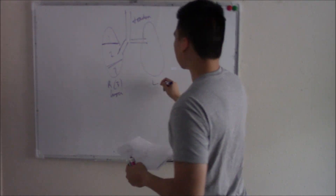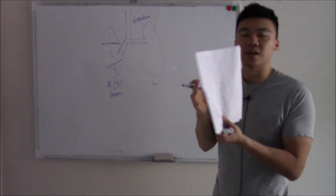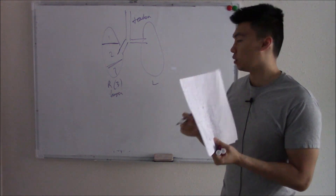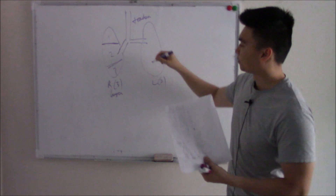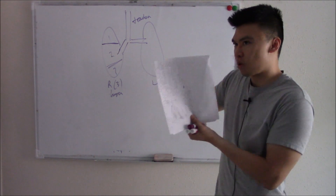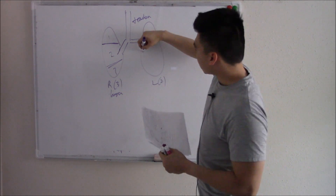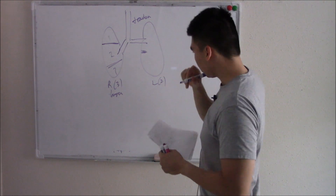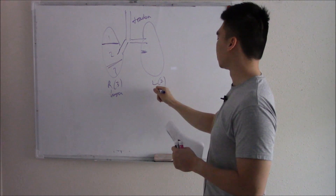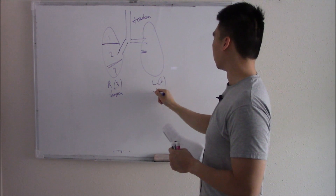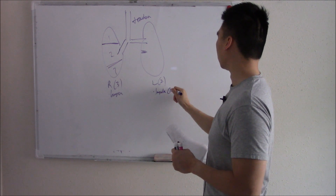Your left lung is a little bit wonky — kind of misshapen. It has this cavity in the middle and only has two lobes. Why is it so different? Because your heart is there. It has a form that kind of wraps around your heart. It has this little projection called the lingula.